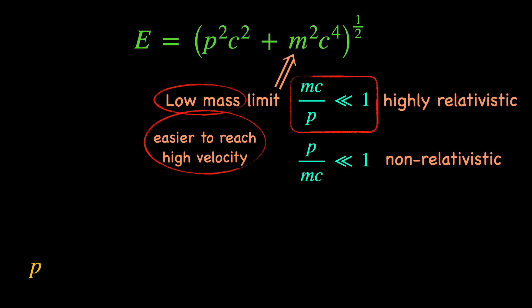Since relativistic momentum is gamma, the Lorentz factor times the rest mass of the particle times its velocity, in the mc by p ratio, the mass cancels out, leaving c upon gamma v behind. Even though the mass is out of the scene,